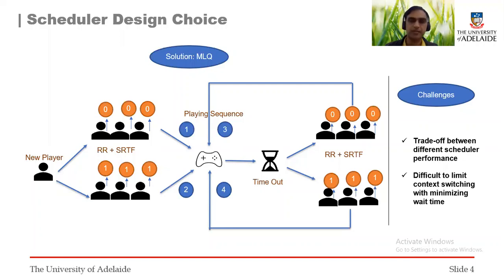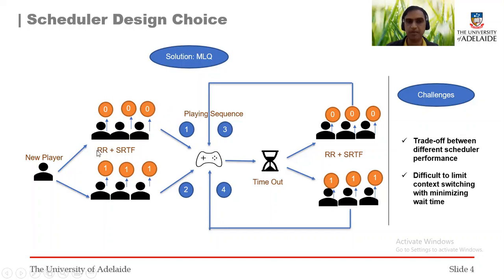So we have a solution here. We have used a multi-level queue structure with four different queues. Each queue is a combination of round-robin and SRTF — that is Shortest Remaining Time First. When more than two players arrive at the same time, they are sorted based on SRTF. Players from higher priority queues are allowed to play first, and only when a queue is empty can players from the lower priority queue play. When there is a timeout, players are preempted and pushed back into different queues based on their priorities.